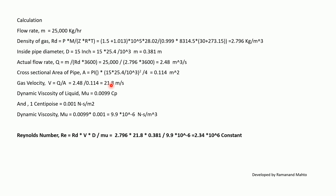Dynamic viscosity of gas: 0.0099 cP, and since 1 centipoise = 0.001 N·s/m², dynamic viscosity = 0.0099 × 0.001 = 9.9 × 10⁻⁶ N·s/m². Reynolds number Re = ρ × V × D / μ = 2.796 × 21.8 × 0.381 / (9.9 × 10⁻⁶) = 2.34 × 10⁶, which is turbulent flow.